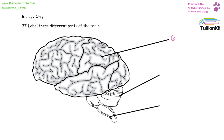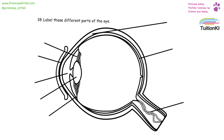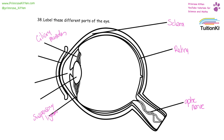In the brain we have the cerebral cortex, the cerebellum, and the medulla. Label these different parts of the eye: the white of the eye that goes all the way around is the sclera. At the back we have the retina. Going to the brain is the optic nerve. We have the ciliary muscles. The pupils are connected by the suspensory ligaments. The lens, the pupil, and the cornea.